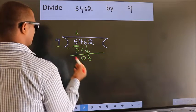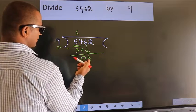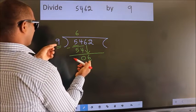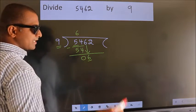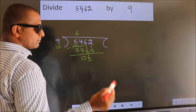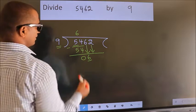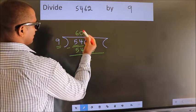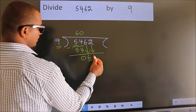Here we have 6. Here 9. 6 smaller than 9, so we should bring down the second number. And the rule to bring down second number is put 0 here. Then only we can bring down this number.